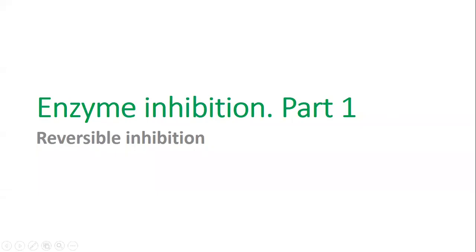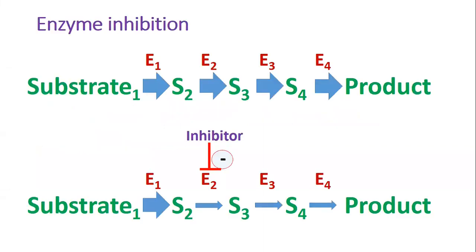Enzymes speed up chemical reactions. Many of them are regulated — they can increase or decrease their activities by binding activators or inhibitors. In this video, we are going to be talking about enzyme inhibitors: molecules that can bind an enzyme and lower its activity.